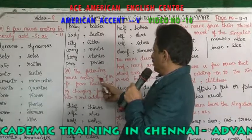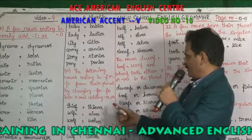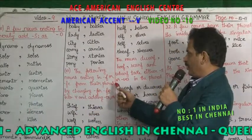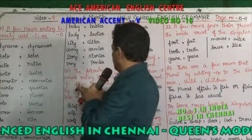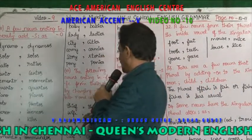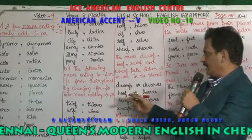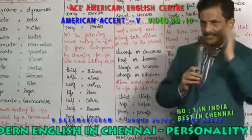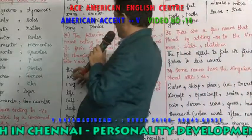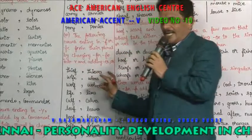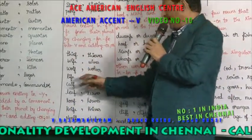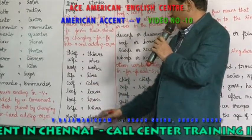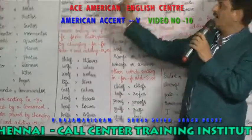The following nouns ending in F or FE form their plural by changing F or FE into V and adding ES. For example: thief — F changes into V and you add ES, making thieves. Wife becomes wives, wolf becomes wolves, life becomes lives, calf becomes calves, leaf becomes leaves, knife becomes knives, shelf becomes shelves, half becomes halves, elf becomes elves.